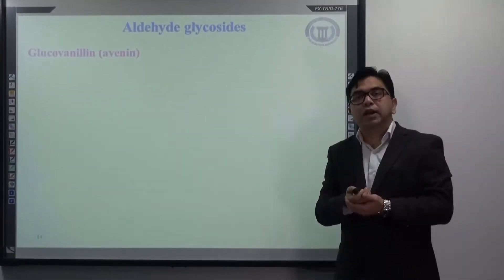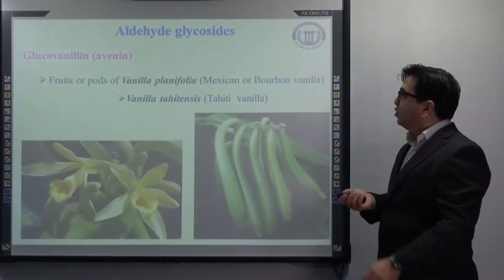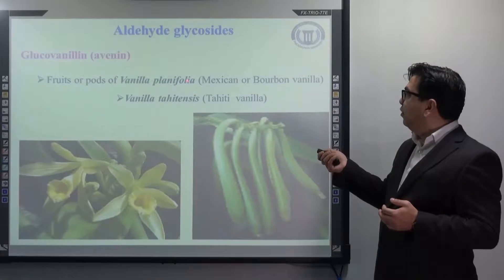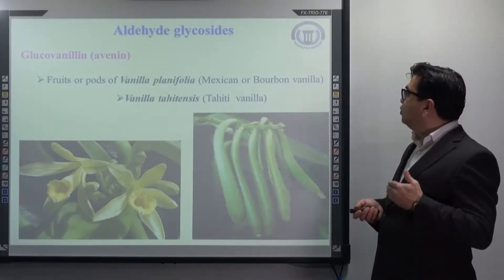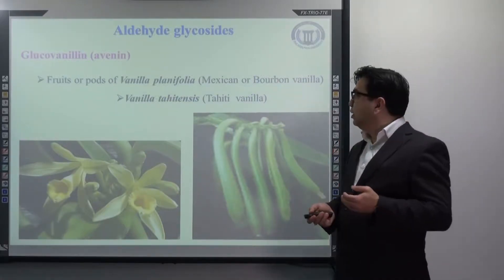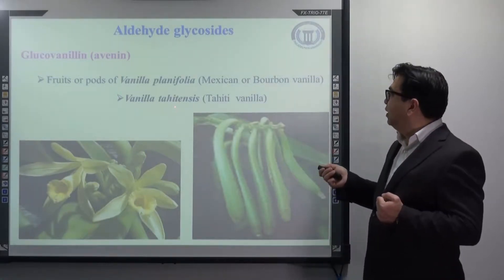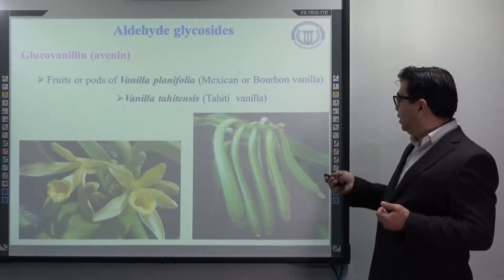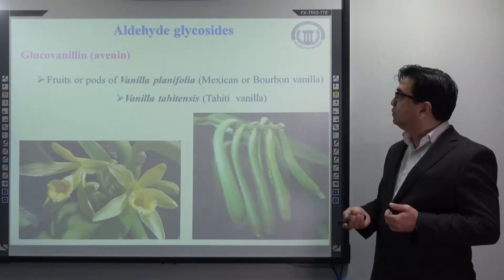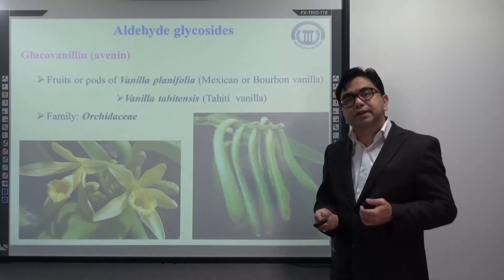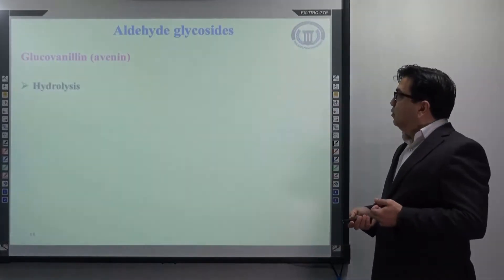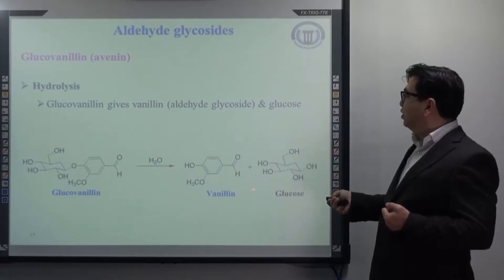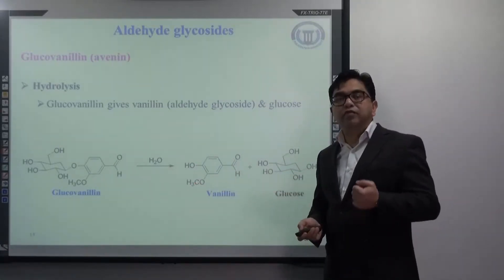The next example is glucovanillin, also known as avenin. This glucovanillin is mainly available in the fruits or parts of Vanilla planifolia, also known as Mexican or Bourbon vanilla in commerce. It is also available from another species, Vanilla tahitensis, known commercially as Tahiti vanilla. It belongs to the family Orchidaceae. Hydrolysis of this glucovanillin results in the formation of vanillin and glucose. Vanillin is the aglycon part of glucovanillin.